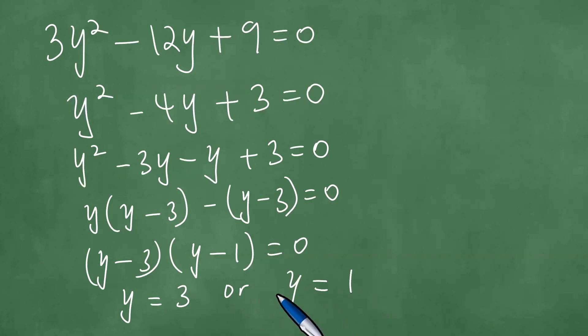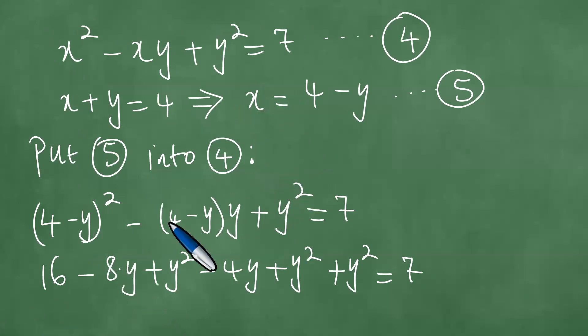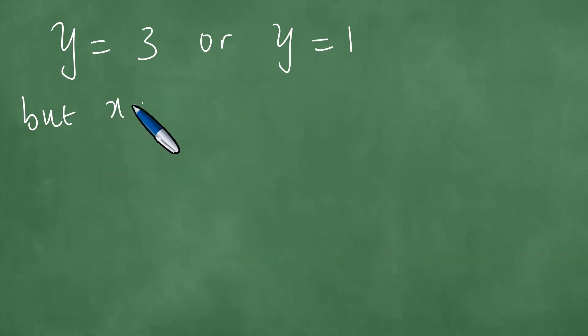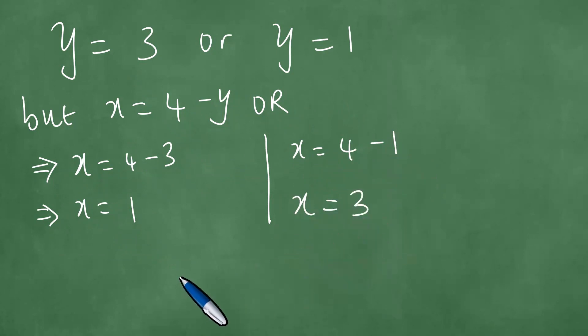We have got two values of y. So if we have that y equals 3 or y equals 1, but x equals 4 minus y. This therefore means that we can get x, which is 4 minus 3, and that means x is 1. Or, with x equals 4 minus y, you have x equals 4 minus 1, and that means that x equals 3.